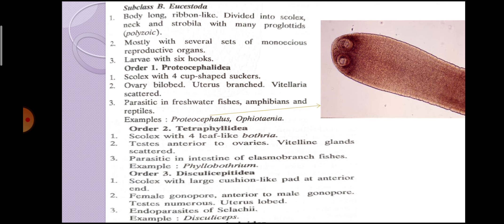The first order under Eucestoda is Order Proteocephalita. The scolex has four cup-shaped suckers. The ovary is bilobed, the uterus is branched, and the vitelline area is scattered. They are parasitic in freshwater fishes, amphibians, and reptiles. Examples are Proteocephalus and Ophiotaenia.